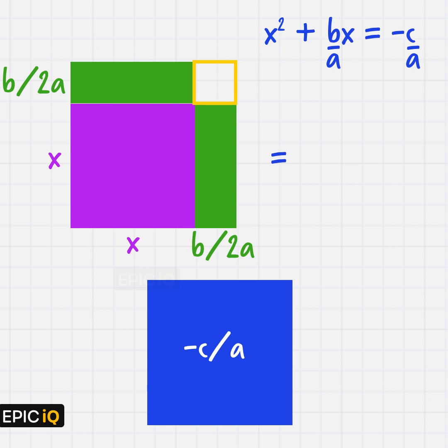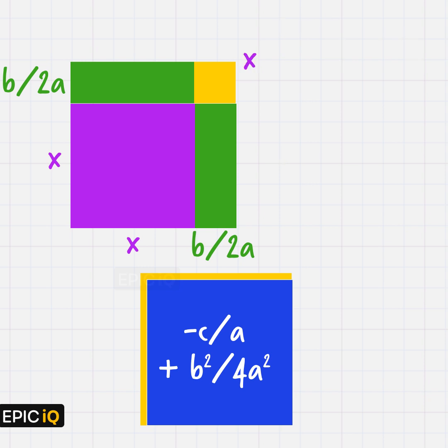So we add squares with sides b/2a both to the left-hand side and the right-hand side. The area of these squares will be b²/4a².